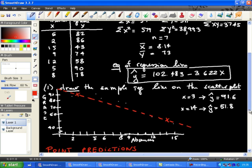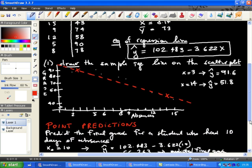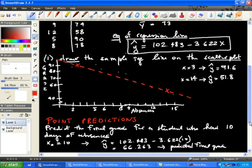The other thing that can be done with the equation of the regression line is, for a start, some point predictions, which are basically, if they give you an x value, what value is predicted using the equation of the line for that x value. So for instance, predict the final grade for a student who had 10 days of absences.